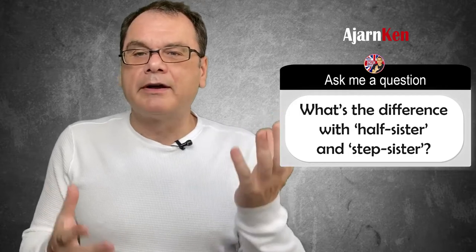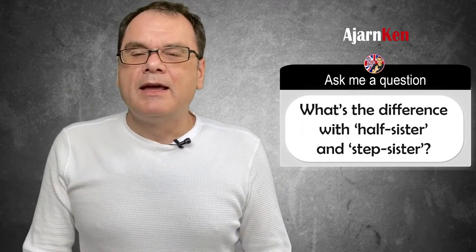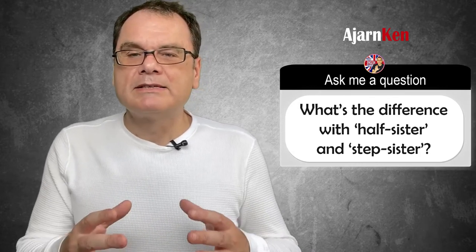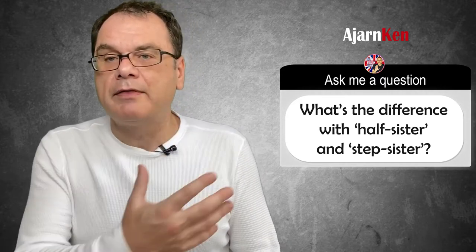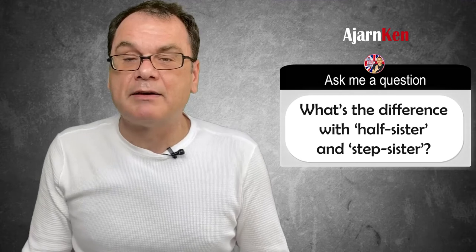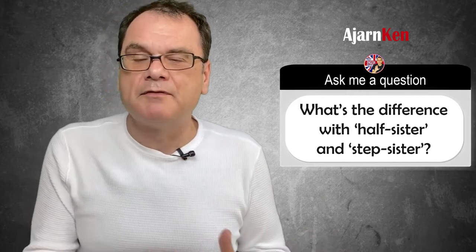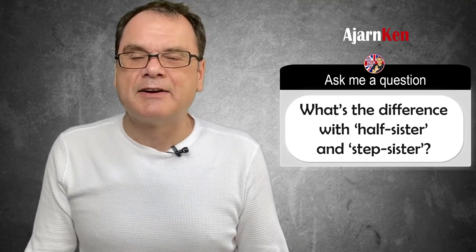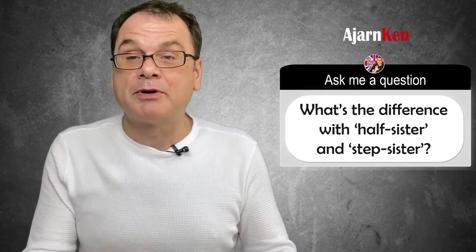We have a mother and a father — everyone has a mother and a father. If I have a half-sister, for example, it means we have one parent the same. So perhaps my father is my father and the girl, my sister, has the same father. Different mothers, but we have the same father. Or it could be we have the same mother but different fathers. This would be your half-sibling, your half-brother or your half-sister — when we have one parent in common, one parent the same.